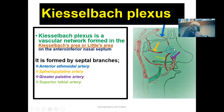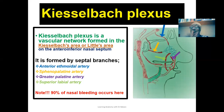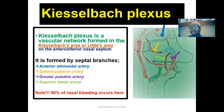This plexus forms around the anterior medial part of the nasal septum, which is why this region is prone to nasal bleeding. Approximately 90% of nasal bleeding occurs from this region because of the anastomosis of arteries at that point.